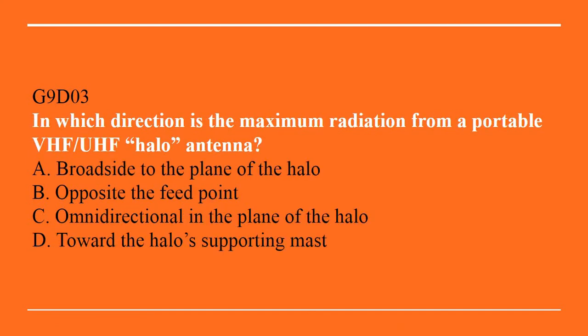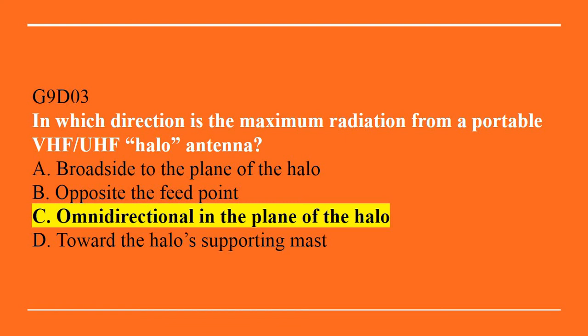G9D03: In which direction is the maximum radiation from a portable VHF/UHF halo antenna? A. Broadside to the plane of the halo. B. Opposite the feed point. C. Omnidirectional in the plane of the halo. Or D. Toward the halo's supporting mast. The answer is C, omnidirectional in the plane of the halo.